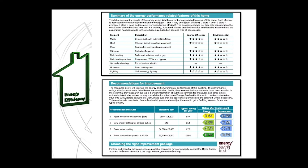The next very useful piece of information is held on the third page of the EPC: the section on recommendations for improvement. These recommendations are generated by the software based on the survey information entered. The recommendations are listed along with approximate costs as well as potential annual savings. The potential energy and environmental ratings following works completion are also noted. It's worth highlighting that the cost savings and ratings are cumulative, meaning it is assumed the measures are carried out in the order noted within the document.